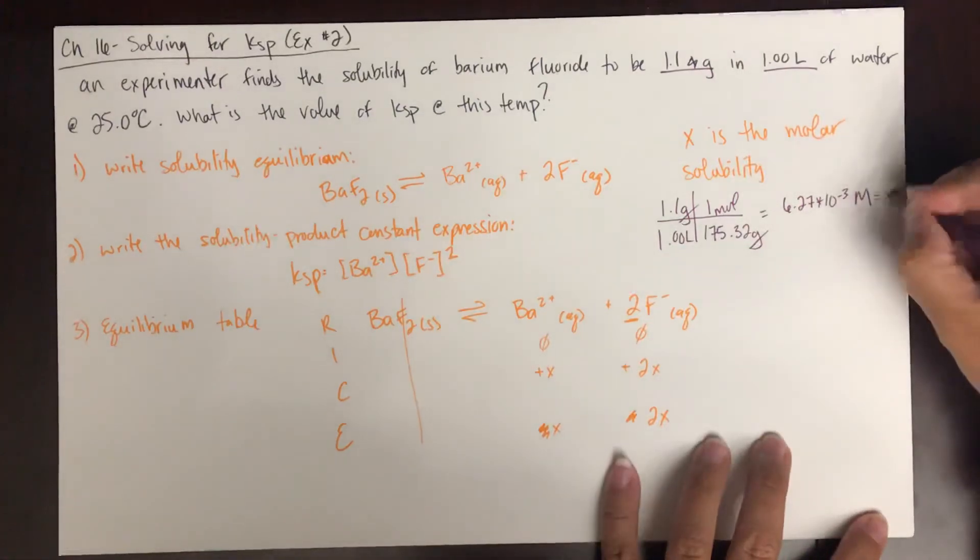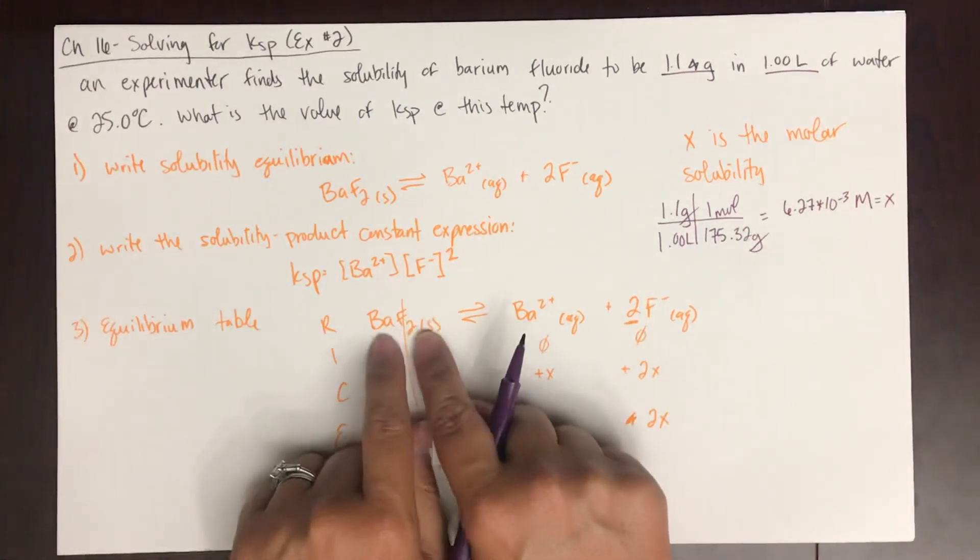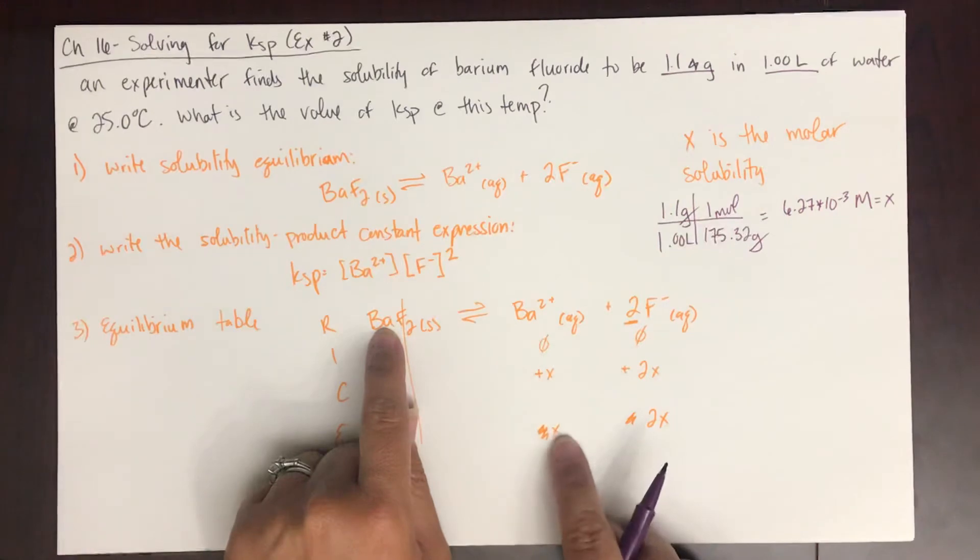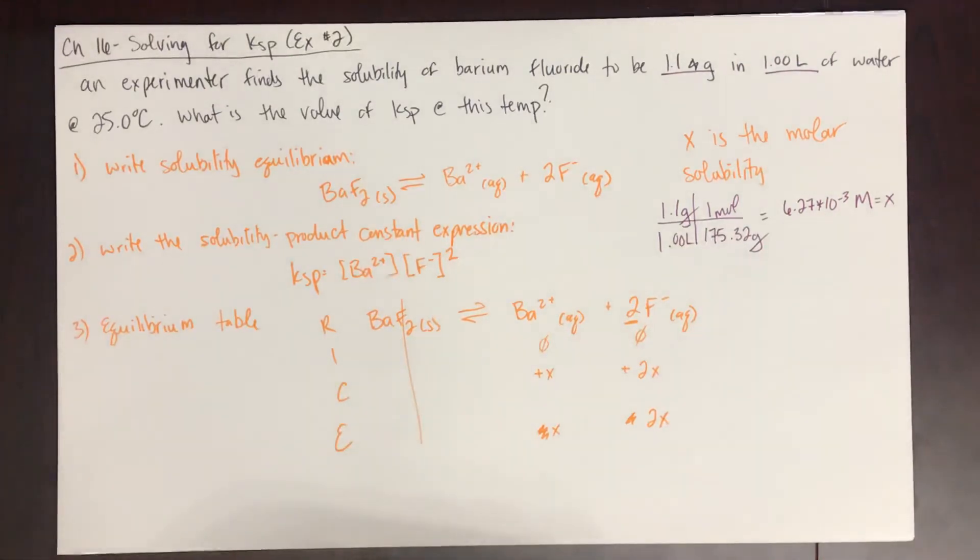This is X, because this is the molar solubility amount. That's the amount of this salt that breaks apart. However much of this salt that breaks apart is going to be the amount, X, of this barium ion that you have. And twice that number is the amount of fluoride ions that you would have. So if you're solving for KSP,